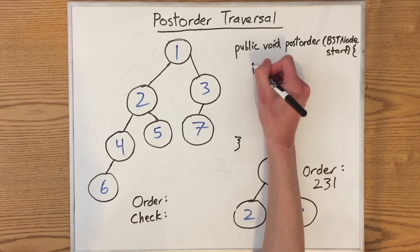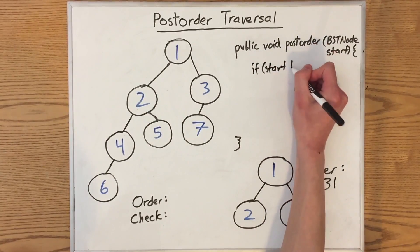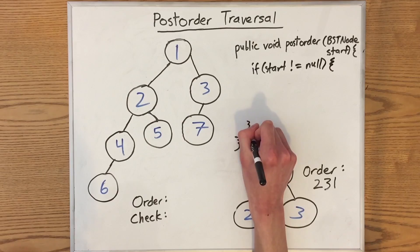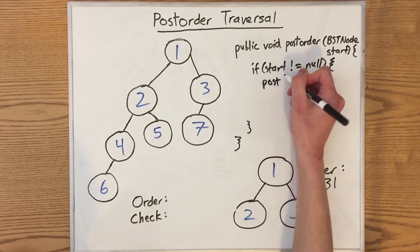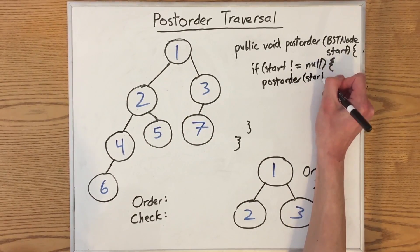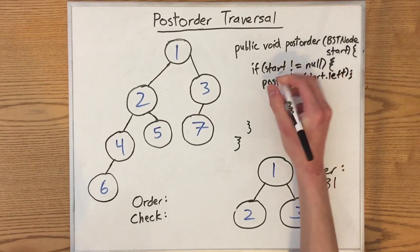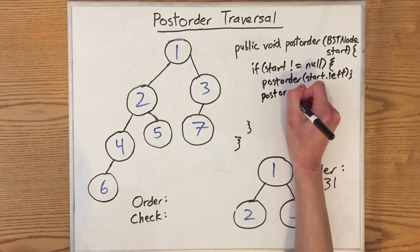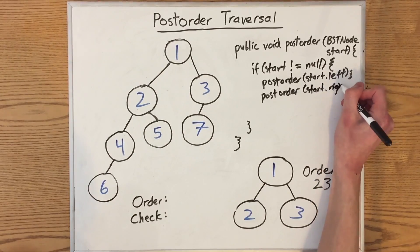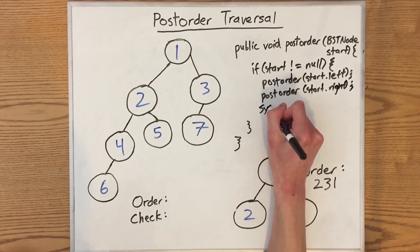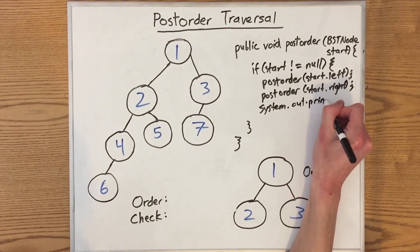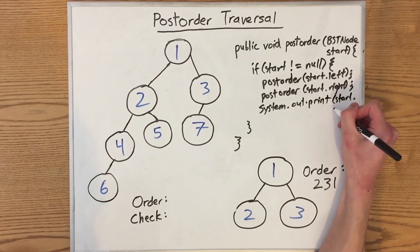The code for this again looks really similar to what we saw before. So again we check if start does not equal null, because we can't call post-order on a null node. And this time our two recursive calls come first, because we're exploring the two possible subtrees first. So we call post-order on start.left, and then we call post-order on start.right. And finally after all of that recursion, we print out the value of the root of the current subtree. So that's system.out.print on start.value.